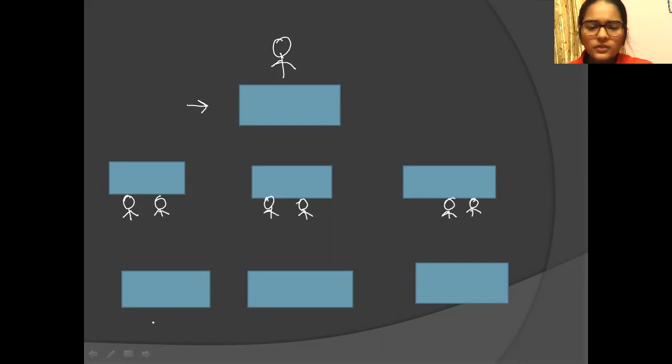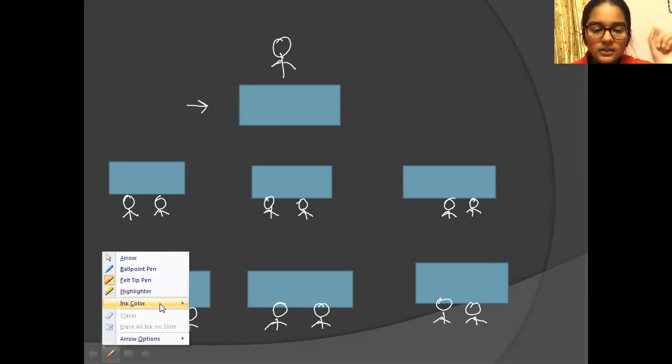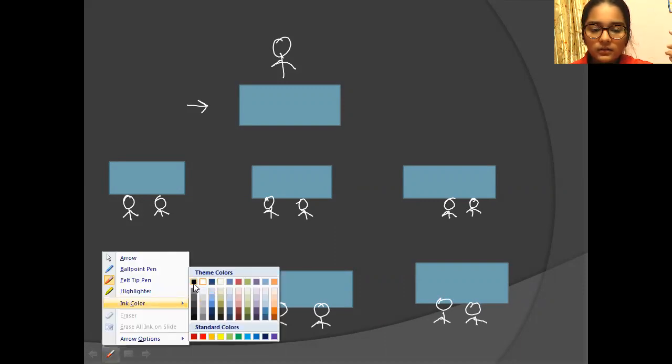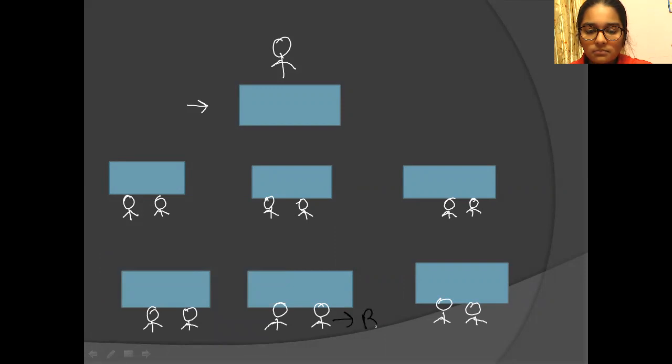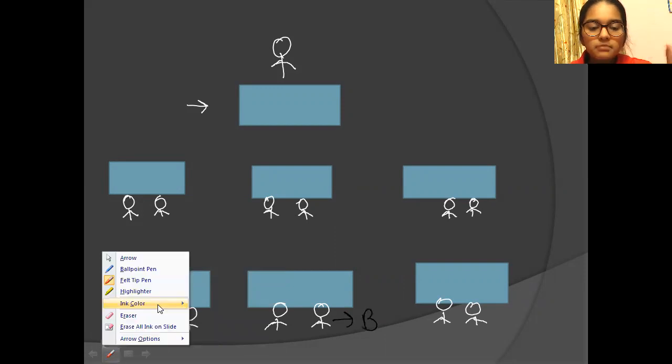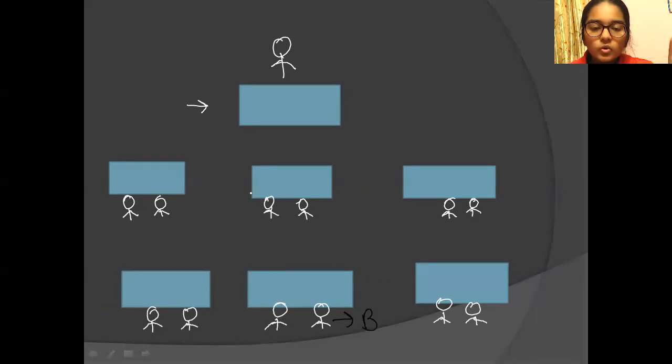You all know that the front-benchers are generally toppers. And back-benchers are always like, okay, what are you going to do? Right? So actually, what happened? This is Mr. B. We will keep his name Mr. B. So Mr. B, we need to be friends with him. What is his name? Mr. A. So Mr. B, we need to be friends with Mr. A.